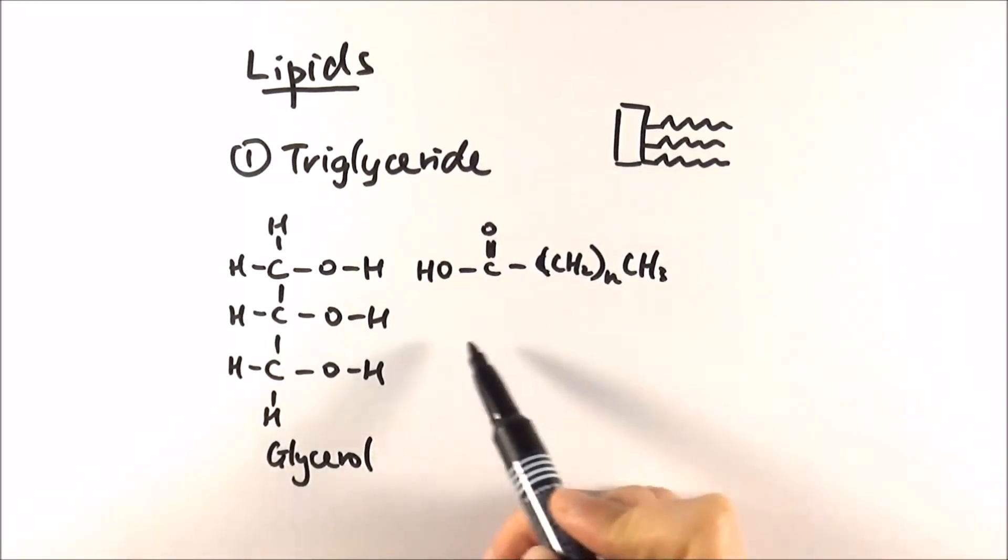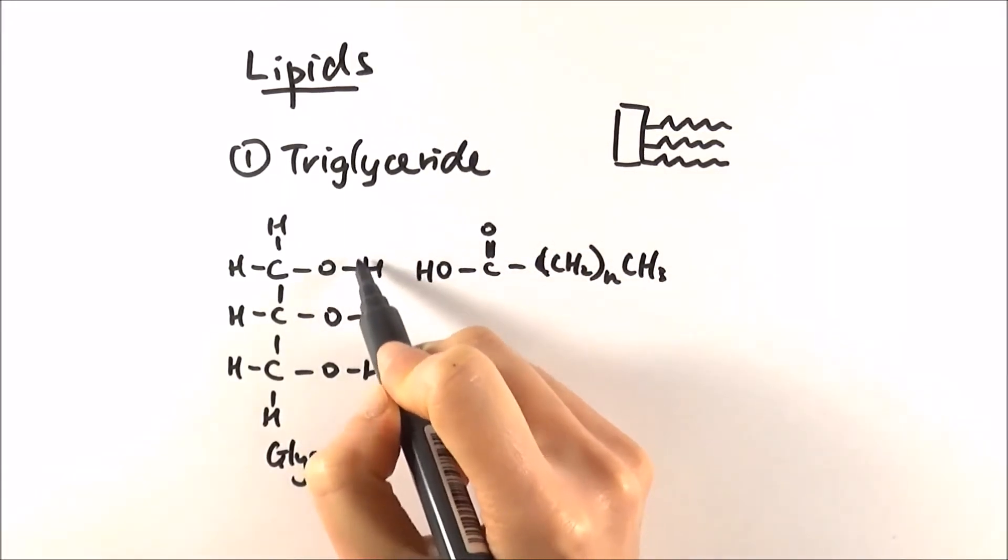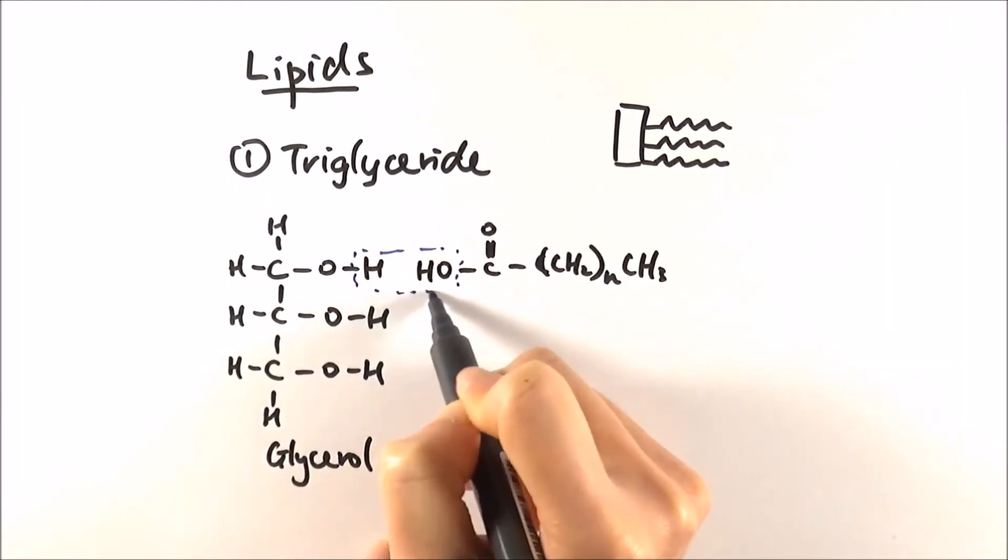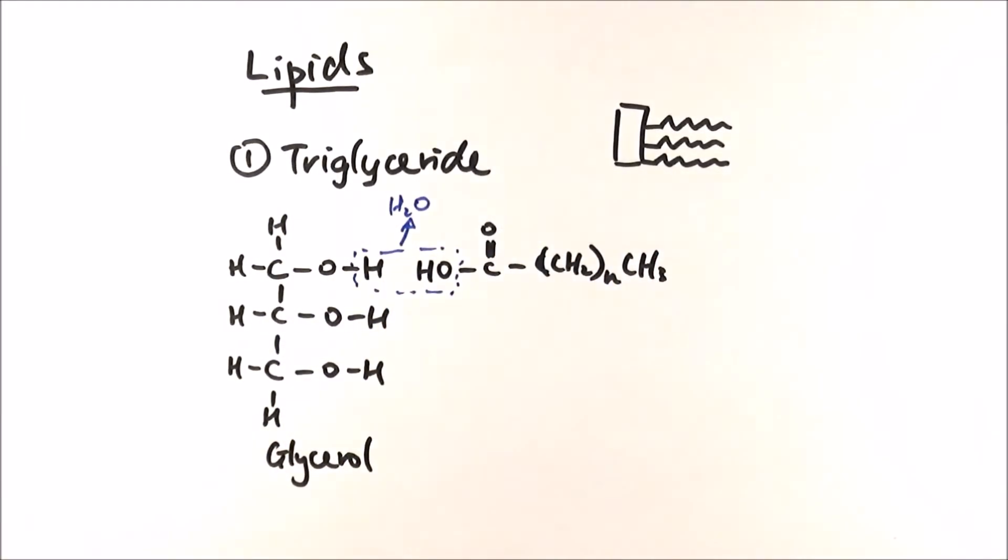Imagine that there are three of these fatty acids here. The hydroxyl group in the carboxyl part will react with the hydrogen to make the water molecule. What you then end up with is these two bits joined together in a structure that looks like this.